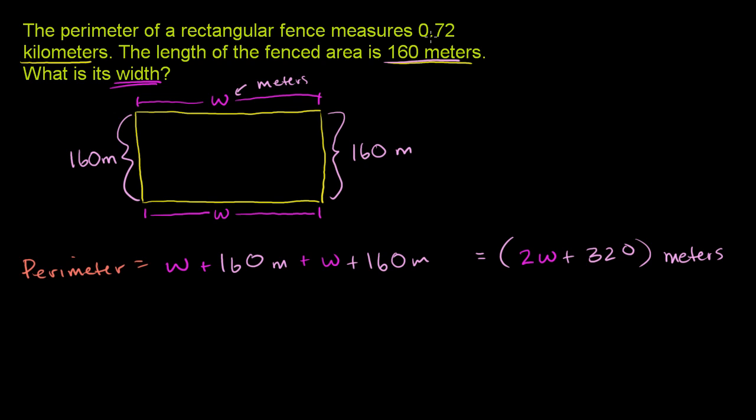Now, they also told us that the perimeter of the fence is 0.72 kilometers. So the perimeter is also equal to 0.72 kilometers, and we can abbreviate that with km. Now, if we wanted to solve an equation, if we wanted to set this thing equal to the total number, the perimeter they gave us, we have to make sure that the units are the same. Here it's in meters, here it's in kilometers.